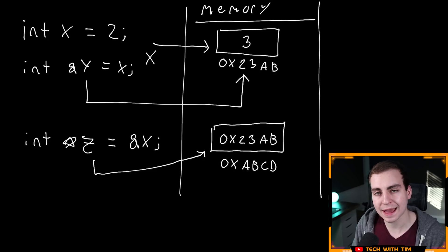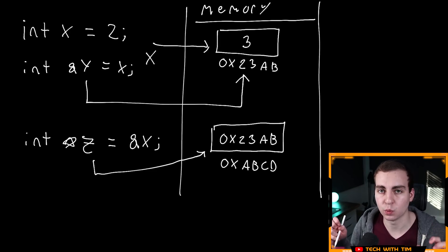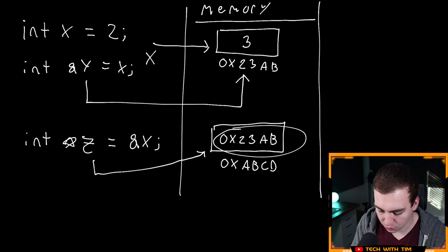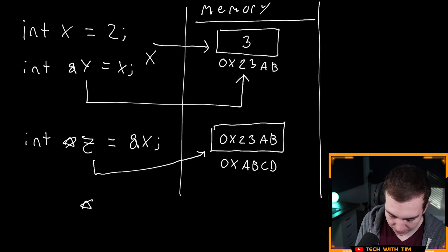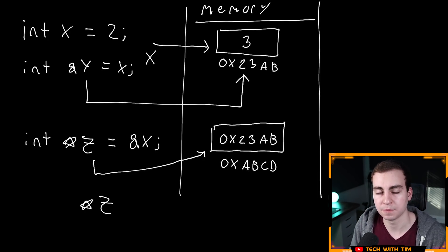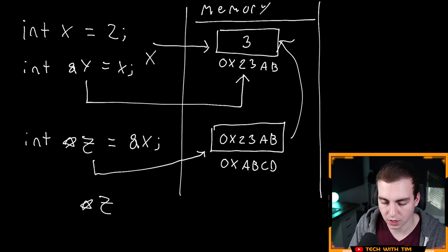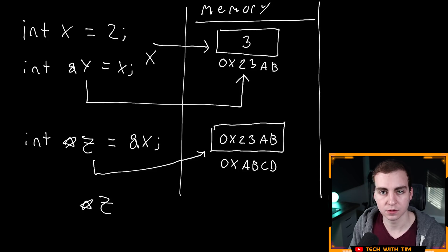So what we actually need to do, if we want to modify the value that this pointer is pointing to, is what's known as dereferencing it. When you dereference a pointer, what that does is give us the value that's actually stored in the memory address location that this pointer is holding. The way you dereference a pointer is you put an asterisk before it. So if I'm accessing zed, I would put an asterisk before it, so that rather than getting the memory address location, it gives me the value stored in that memory address location.